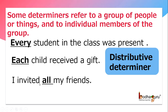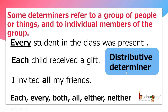I invited all my friends. Here, 'all' is referring to the group of people and it's an example of a distributive determiner. So, words like each, every, both, all, either are examples of distributive determiners.